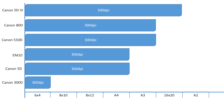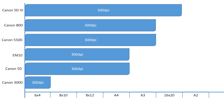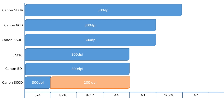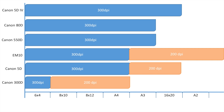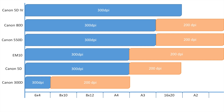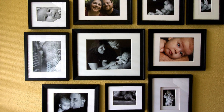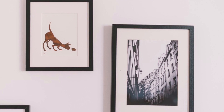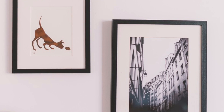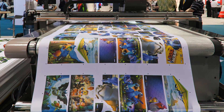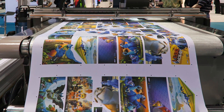The Canon 5D Mark IV can go up to 16 by 20 at 300 DPI. Rather than megapixels, I think DPI is more important, because if we lower our DPI we can print bigger. At 200 DPI, the Canon 300D can go all the way up to A4, the Canon 5D up to 16 by 9, and the EM10, 550D, 80D, and Canon 5D Mark IV can all print images bigger than A2. You're only going to see a difference when you look very closely — most big prints you put up on a wall, you look at them from a distance, and I'm not convinced dropping the resolution to 200 DPI is going to make a great deal of difference. I do intend to test this in a subsequent video.